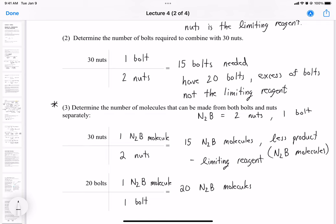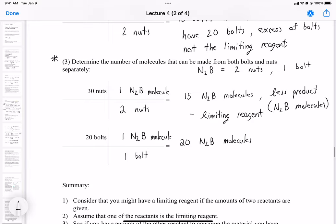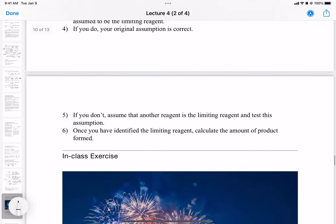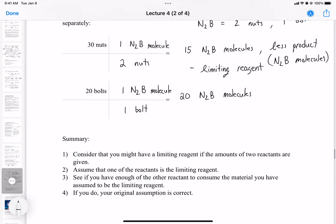So once you hit 15 N2B molecules, there's no more nuts to produce more product. So it's kind of like a factory line, right? You don't have enough nuts, you can't assemble a machine, right? So once you run out, you halt production. So it's kind of similar to here. Okay, so in the next example we'll go over an exercise given the limitations. So see you then.